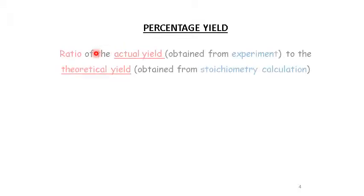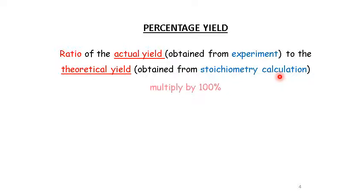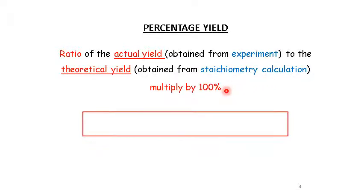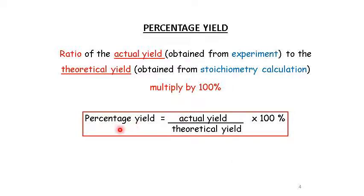What is the definition of percentage yield? Percentage yield is the ratio of the actual yield which obtained from experiment to the theoretical yield, which obtained from stoichiometry calculation. So then we need to multiply by 100%. This is the formula: percentage yield equals actual yield over theoretical yield times 100%. Let's try question 1.